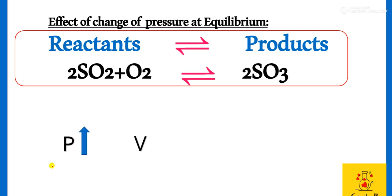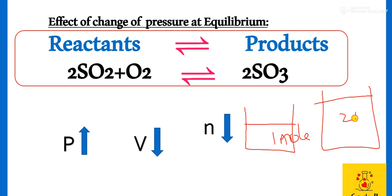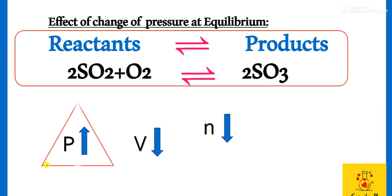By increasing the pressure, volume will decrease and number of moles will also decrease. Because yahan par huma hai pas number of moles or volume ka direct relationship hai. Agar one mole gas ho ghi, toh woh less volume occupy kareegi. Agar huma hai pas two moles gas ho ghi, toh woh zyada volume occupy kareegi. Toh agar hum pressure ko increase kareegi hai, toh number of moles decrease kareegi hai.